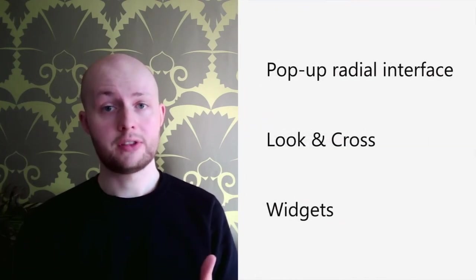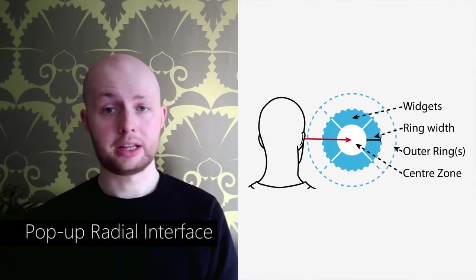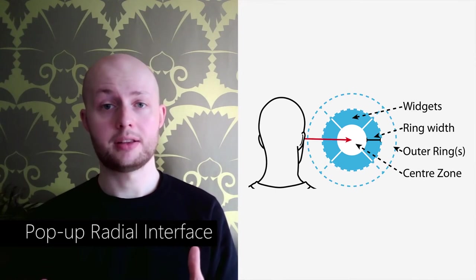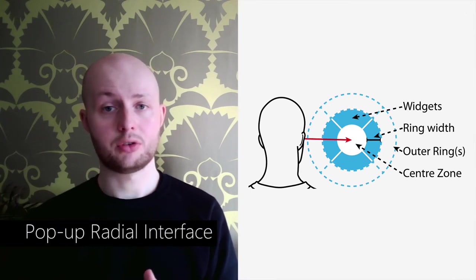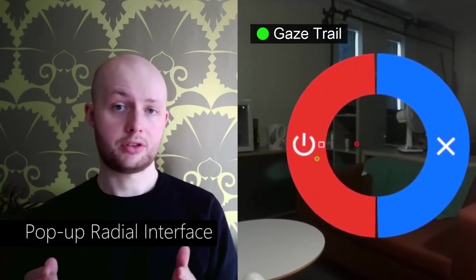Radii's core concept is to use an eye and head controlled interface for expressive hands-free control of objects in any 3D environment. To achieve this, Radii consists of three parts. The first part is a pop-up radial interface, and its radial structure is based on the eyes' and head's capability to move in all directions when performing gaze shifts. The pop-up nature allows on-demand control without causing clutter when not in use. The interface structure, position, and invocation depend on its context of use.